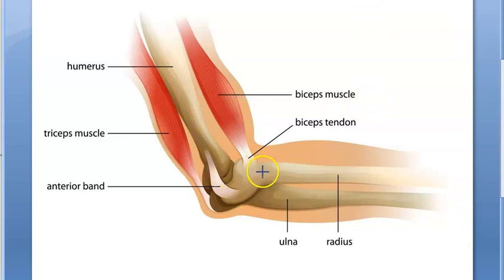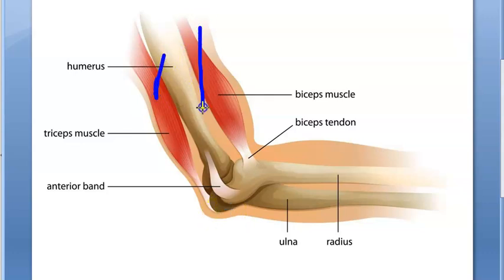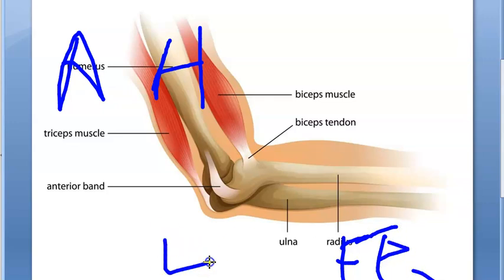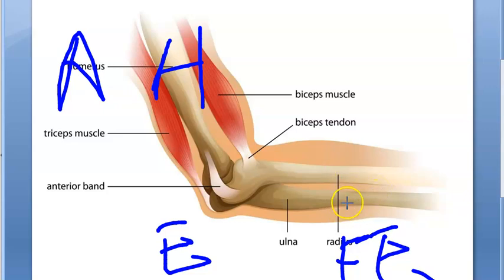Usually whenever we learn anatomy, we will try to keep one picture in our head and that should be the right side. So here you have the humerus in your arm. This part of your body is called your arm and this part is called your forearm, in between which you have the elbow joint. And what you see here in the forearm, there are two bones, two long bones.